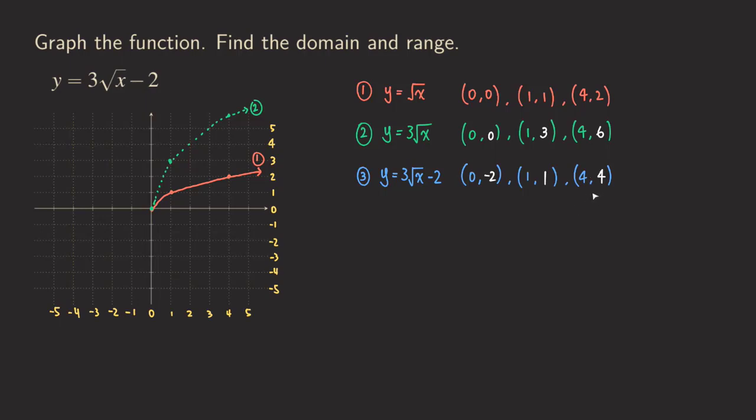The shape is still similar to the parent function even though it's already being stretched. So now we get those points and actually you don't have to look at those points. You can actually just do it directly from the graph by moving the whole graph down by two units.